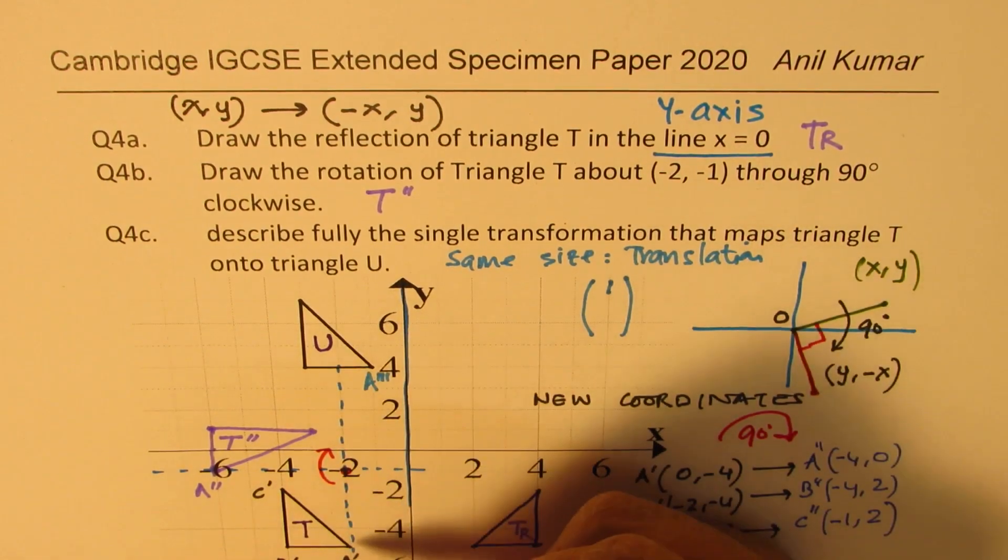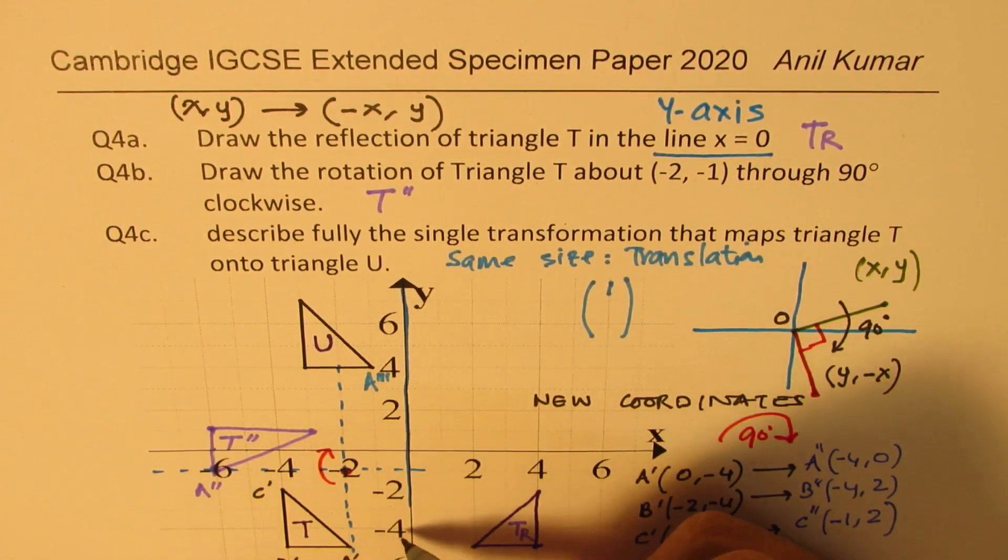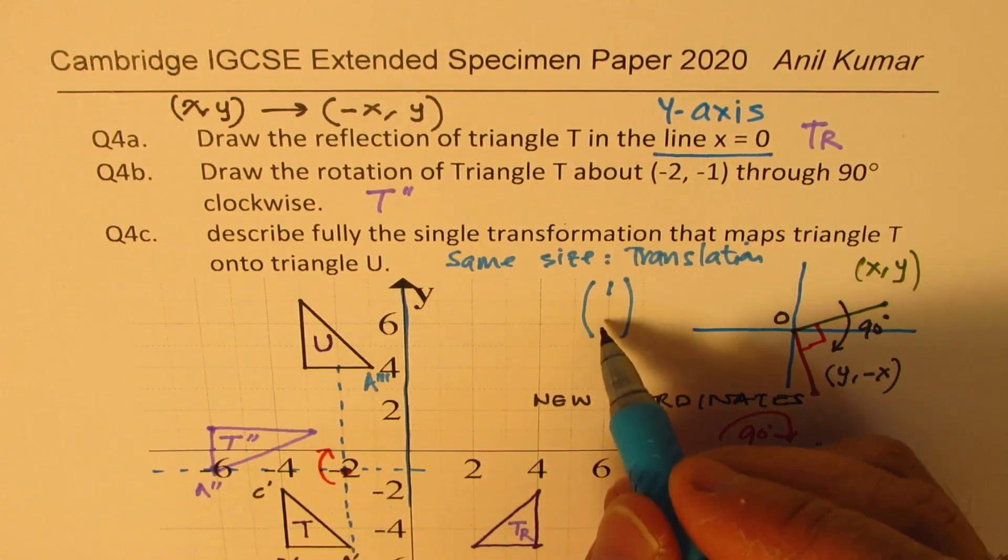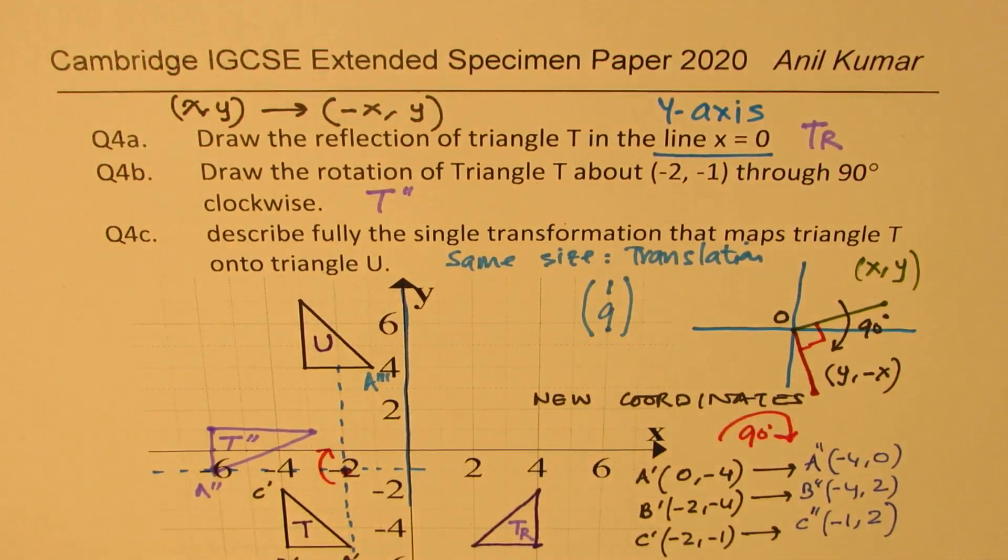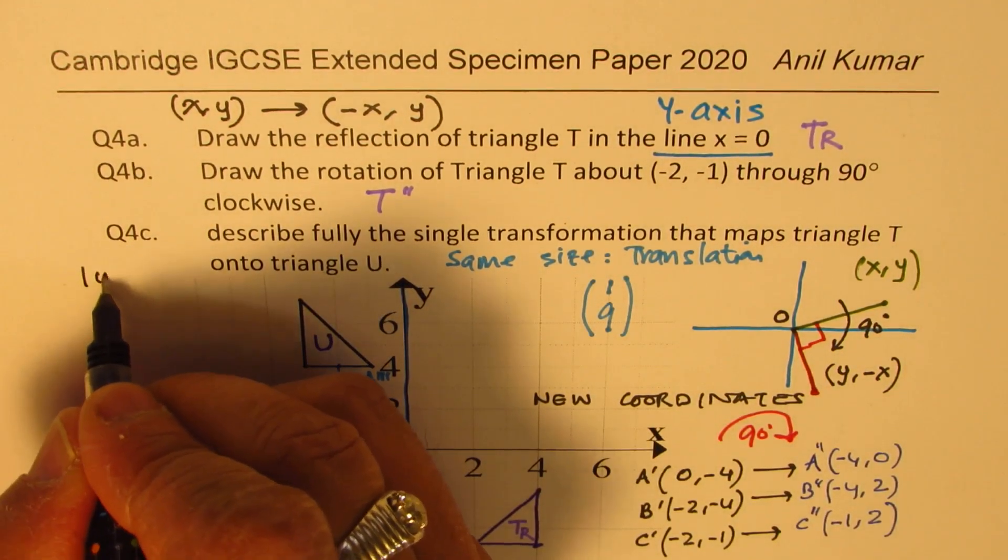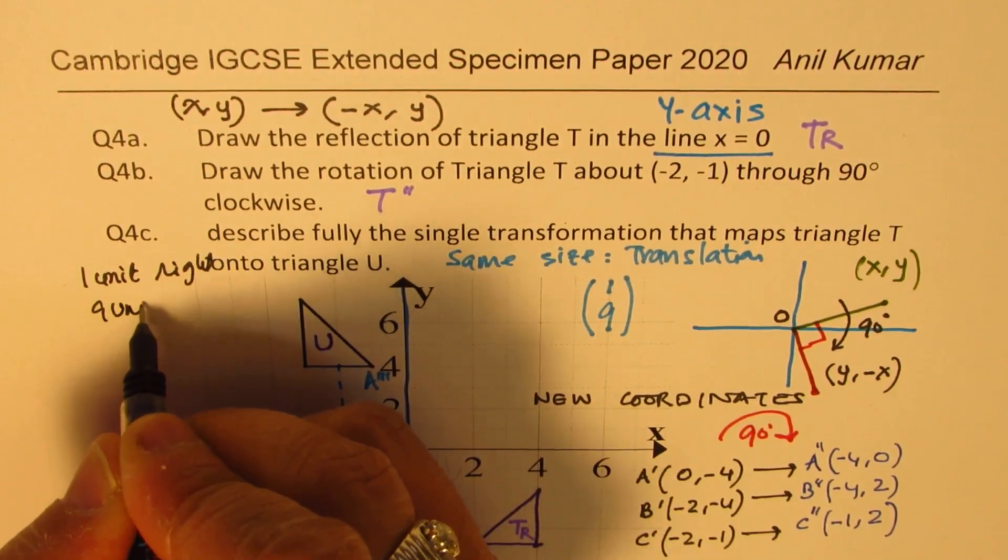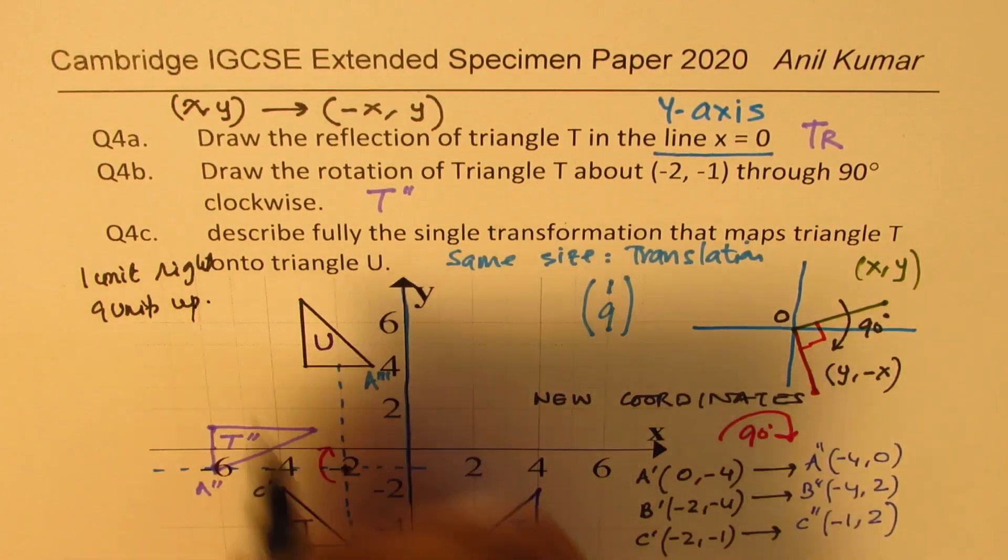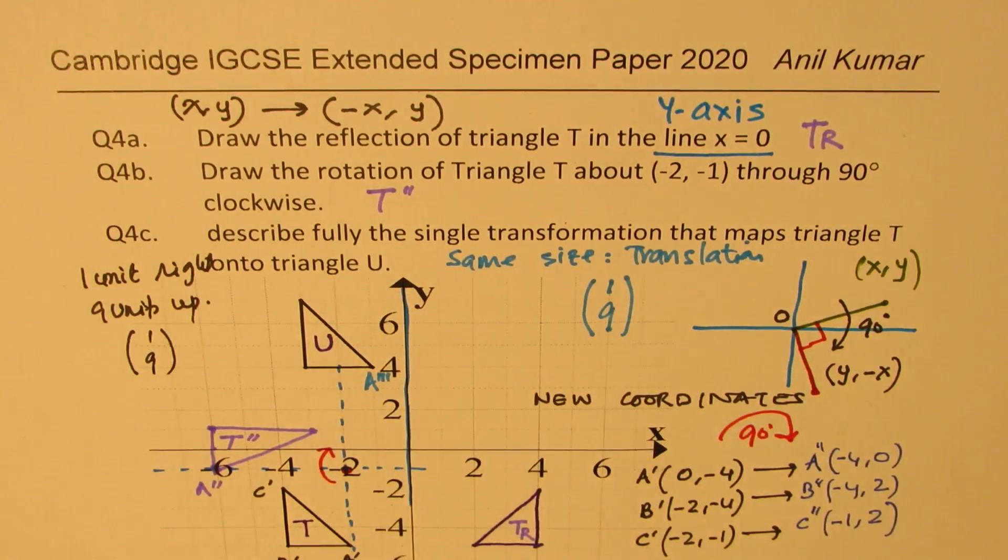It has moved one unit to the right. So we can say one unit to the right, and we'll write a matrix. And how much up? As far as it's concerned, it is moving from minus 5 to 4, 9 units up. So that is how you could describe the transformation. The transformation is one unit right and 9 units up, which we'll write as a single transformation, as a matrix: 1, 9. Does it make sense to you? That is how we are going to answer this question.